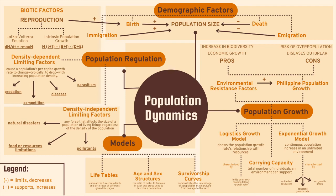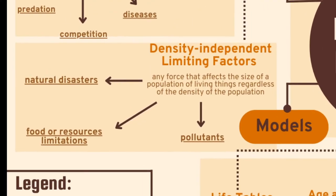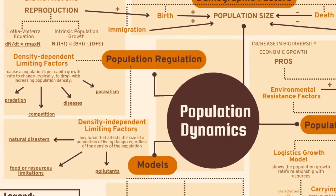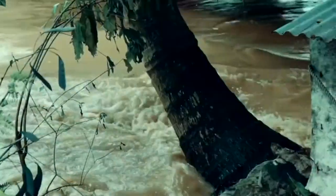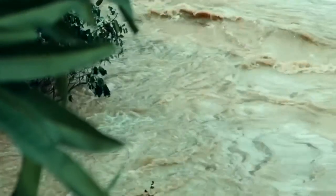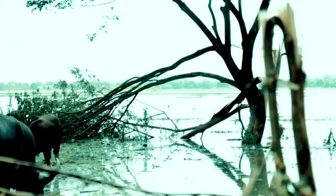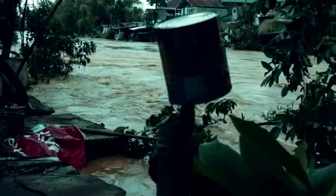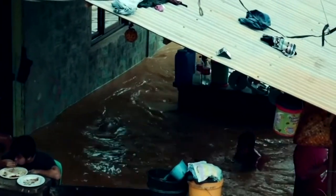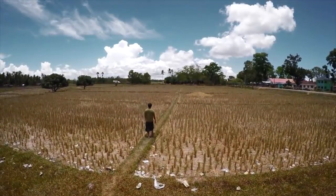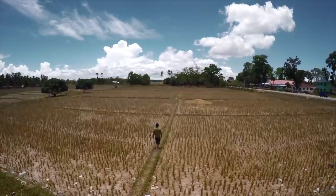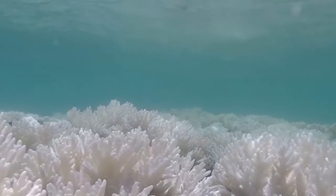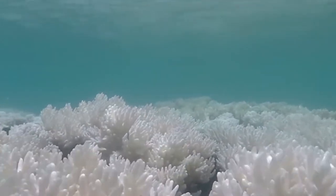Other factors that affect population size are density-independent factors and density-dependent factors. An example of a density-independent factor is extreme climate events like typhoons or droughts. These occurrences happen regardless of population size and may produce sudden changes in population size — they are not conscious of keeping population sizes in check. For instance, the El Niño episode in the Philippines in 1997 and 1998 resulted in a 46 to 80 percent decline in coral cover at Bolinao, Pangasinan.